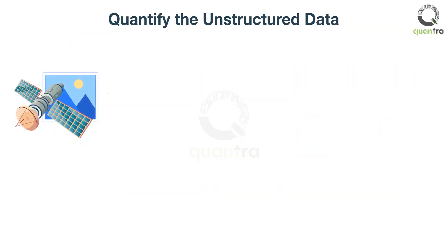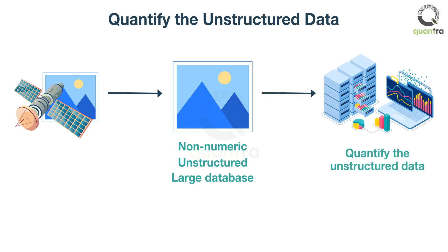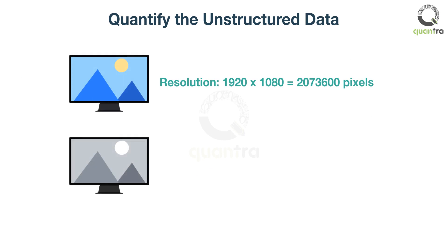Satellite imagery is in the form of high-quality images. They are non-numeric, unstructured, and form an extremely large database. It is impossible to analyze these data in their original form. Hence you need to quantify the unstructured data for any further use. For example, let's consider a standard 1080p monitor. It has a resolution of 1920x1080 pixels. Restricting the display to only black and white images, one image would be represented by an array of two raised to the power 2,073,600 values.